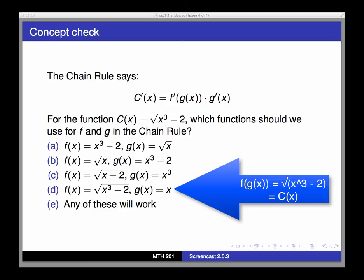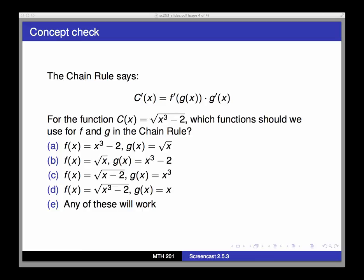However, when we think about the chain rule, notice that eventually I will need to take two derivatives, the derivative of f, the outside function, and the derivative of g, the inside function. If I chose f and g so that it's not easy to differentiate one of these, then I have messed myself up. For example, in c, when I go to differentiate square root of x minus 2, well, how would I do that? This is another composite function, and I would have to use the chain rule a second time, and that's not very easy.